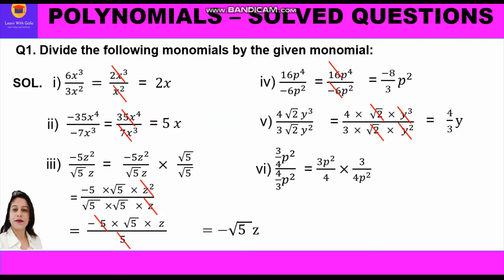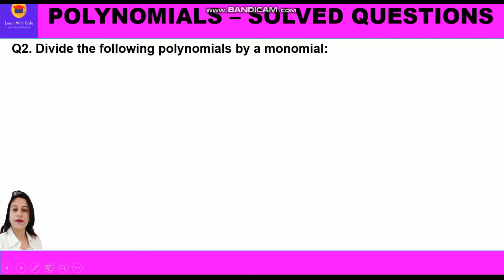The sixth part is (3/4·p²) divided by (4/3·p²). Whenever a fraction is divided by another fraction we multiply by its reciprocal. So 3/4·p² multiplied by 3/(4p²) — p² and p² cancel, 3×3 = 9 and 4×4 = 16, giving the final answer of 9/16.